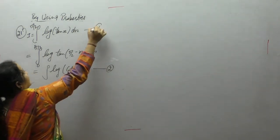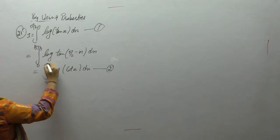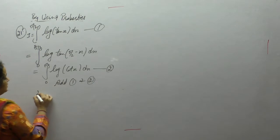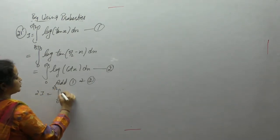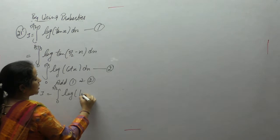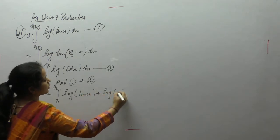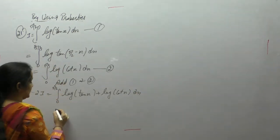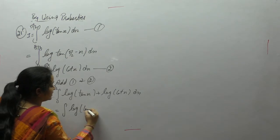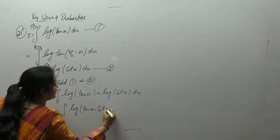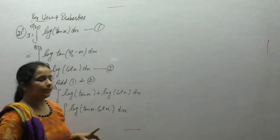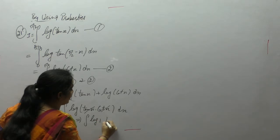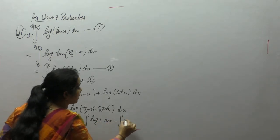Adding equations 1 and 2, with the same limits 0 to π/2: 2I equals the integral of log(tan x) plus log(cot x). Using the log property, log A plus log B equals log(A·B), so we get log(tan x · cot x). Since cot x is 1/tan x, this gives log(1), and the value of log 1 is 0.